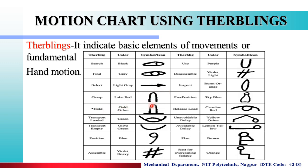Find के लिए gray color होंगा, इसके लिए symbol होंगा. Select के लिए light gray होंगा और इसके लिए symbol होंगा. Grasp के लिए lake red होंगा, इसके लिए symbol होंगा. Whether it is Disassemble, whether it is Inspect, whether it is Use, whether it is Search, whether it is Find, whether it is Direct — each has its own symbol.